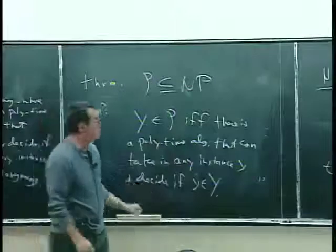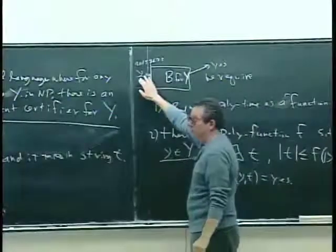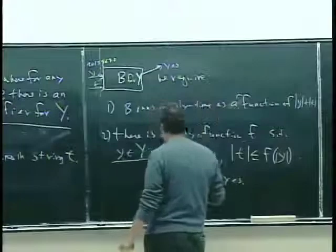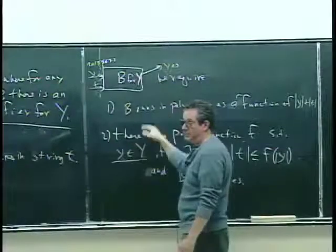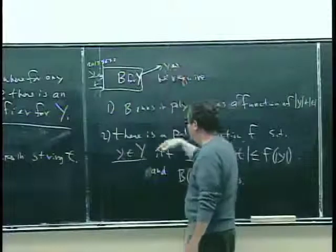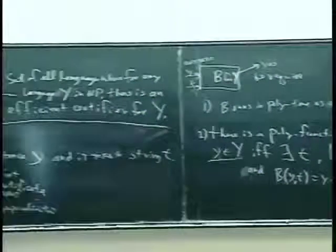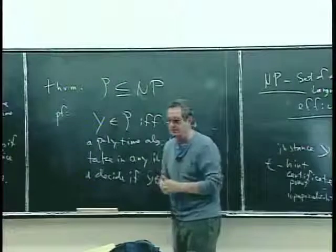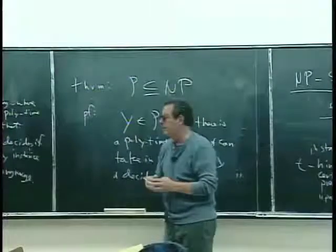What it means to be in NP is that there's a polynomial time algorithm which can take in an instance Y and a hint T which is not huge, and it runs in polynomial time, and if Y is in capital Y it will say yes — and only if Y is in capital Y. So if we take a problem Y which is in capital P, how do we prove that's in NP? You could say that B is the polynomial time algorithm for Y and then just ignore T.